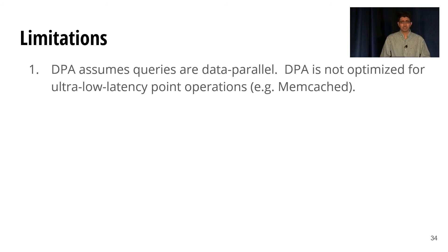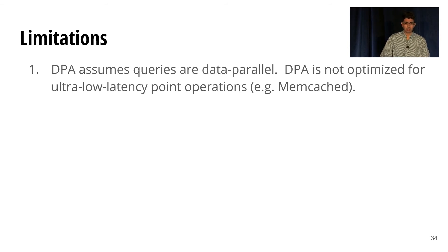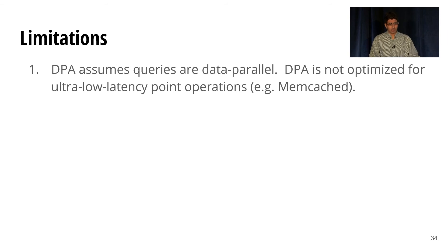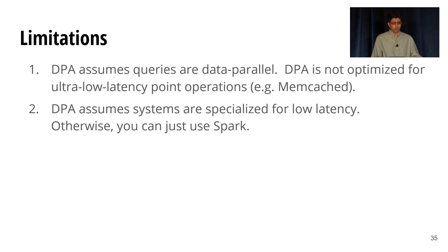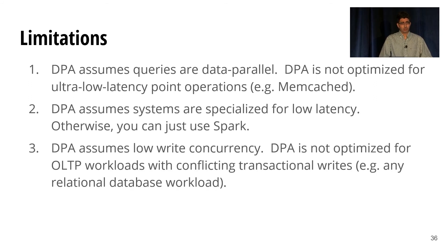I want to talk about some of the limitations of this programming model — what it can't do. These limitations are closely tied to the core properties of a query serving system. Our first limitation is that we assume queries are data parallel — we're not optimized for ultra-low latency point operations like in memcached. We also assume systems are specialized for low latency; if they're not, you could just use Spark. Finally, we assume low write concurrency — we're not optimized for OLTP workloads with highly conflicting transactional writes, like a conventional relational database workload.